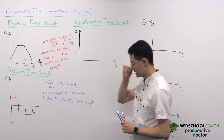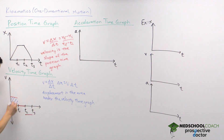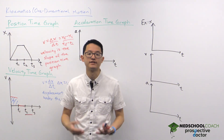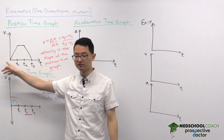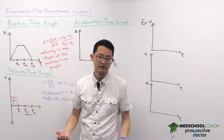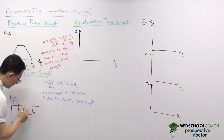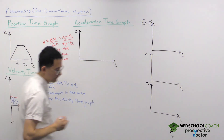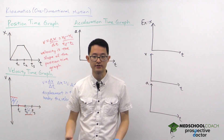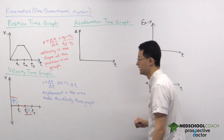Looking at the graph: from 0 to T1, we have positive area above the x-axis, meaning positive displacement — which makes sense since the object moved in the positive direction. From T1 to T2, there is no area, so no displacement, consistent with no change in position. From T2 to T3, the area is negative because it is below the x-axis, indicating displacement in the negative direction, matching what we saw in the position-time graph.